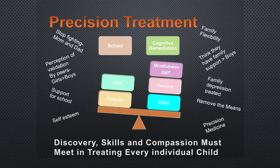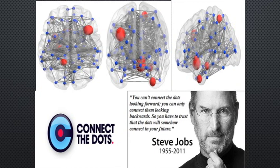Precision medicine encompasses cognitive remediation, mindfulness, DBT, rainbow therapy, children peer and sibling school. Discovery is important. Skill development is important. Compassion is important. I think all three should meet in treating every individual child and their system. Like Steve Jobs says: you can't connect the dots looking forward, you can only connect them looking backwards. So maybe we're okay not knowing how all these different fields — monkey studies, language studies, clinical work — will fit together. We have to trust that the dots will connect in our future. Let's connect them and do the best we can. Thank you to our team — this is our program at UIC.